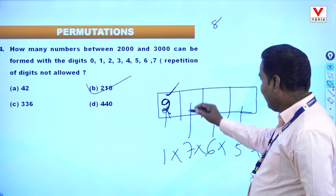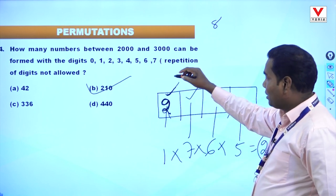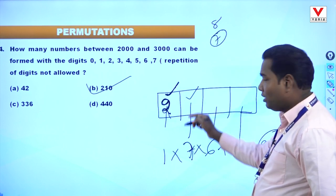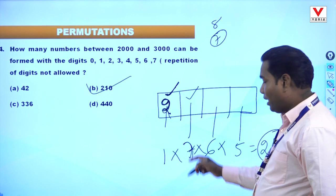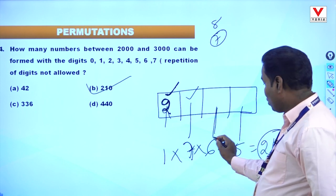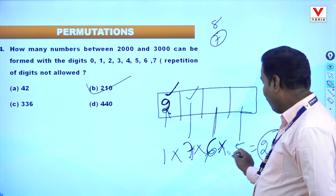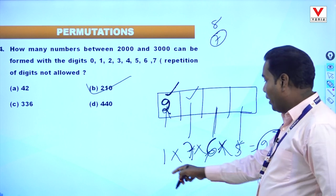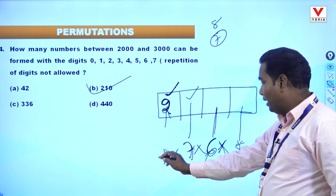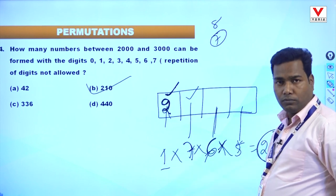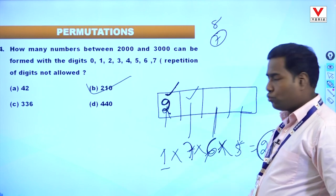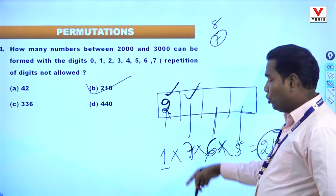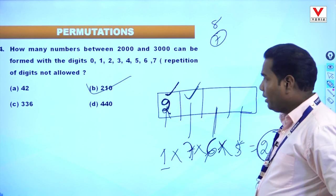In this place there are 8 numbers. After using 2, the rest are 7. The 7 numbers are used in the next place, then 6, then 5. So: 1 into 7 into 6 into 5 = 210. I write 1 for the thousands place (only 2 is used there), 7 for the hundreds place, 6 for tens, 5 for units.